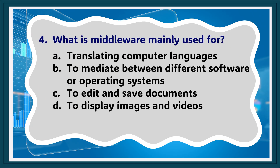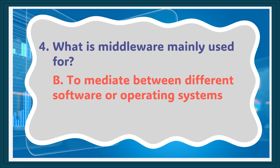Question 4: What is middleware mainly used for? A. Translating computer languages, B. To mediate between different software or operating systems, C. To edit and save documents, D. To display images and videos. The answer is B. To mediate between different software or operating systems.